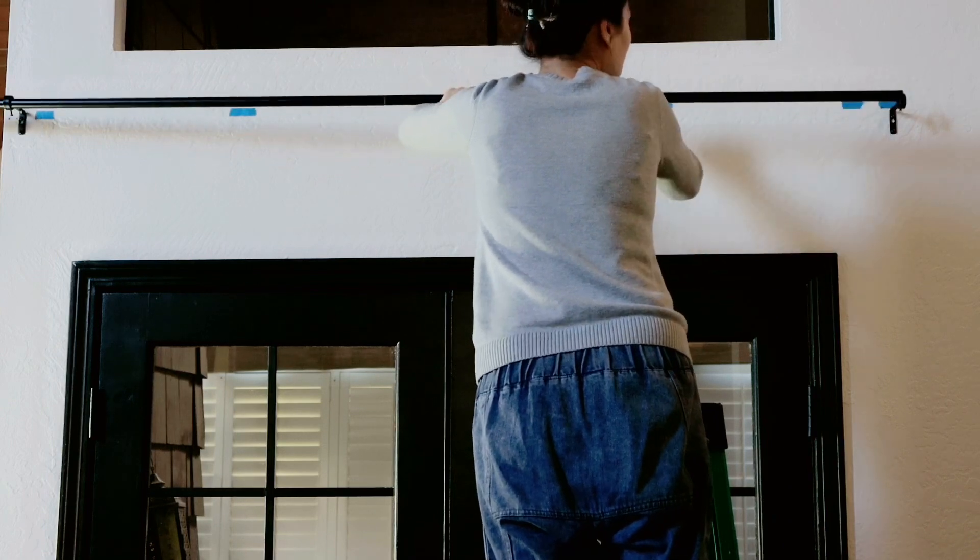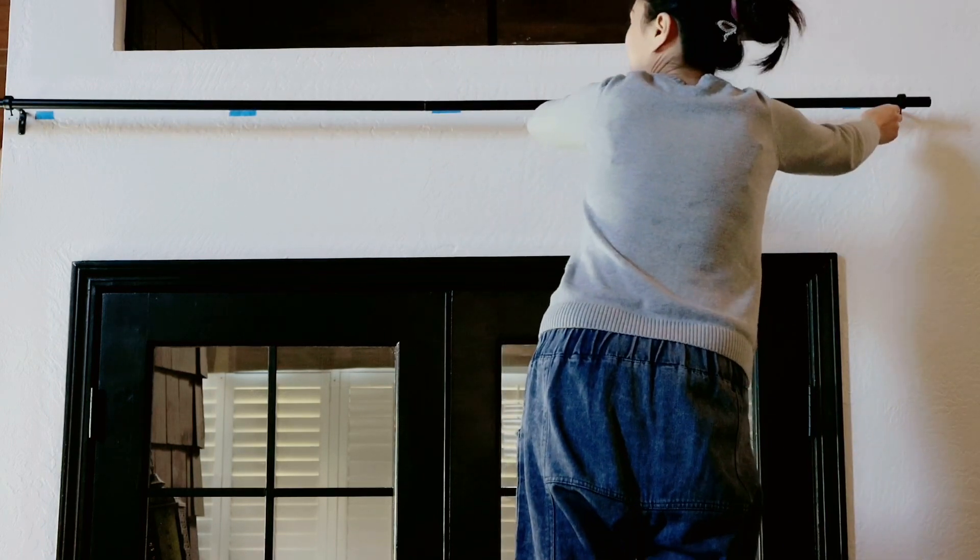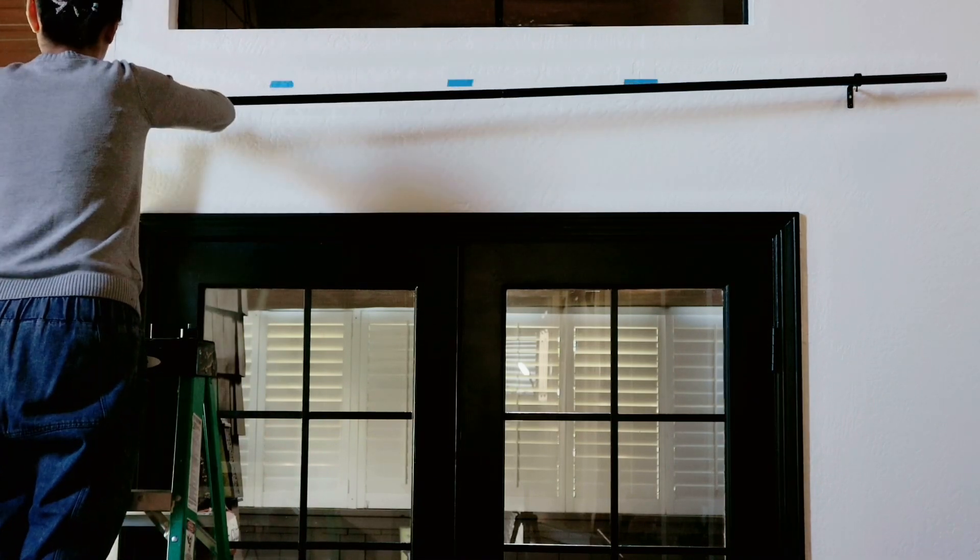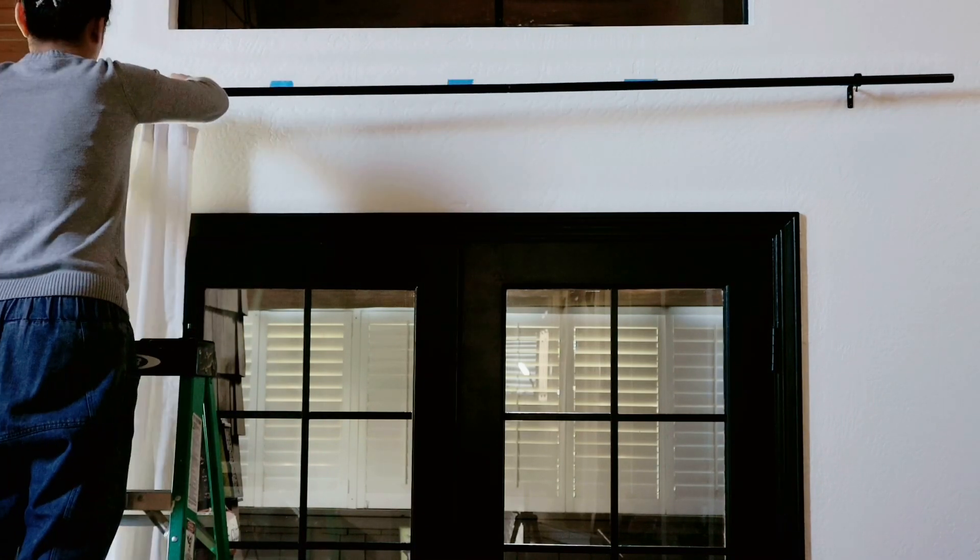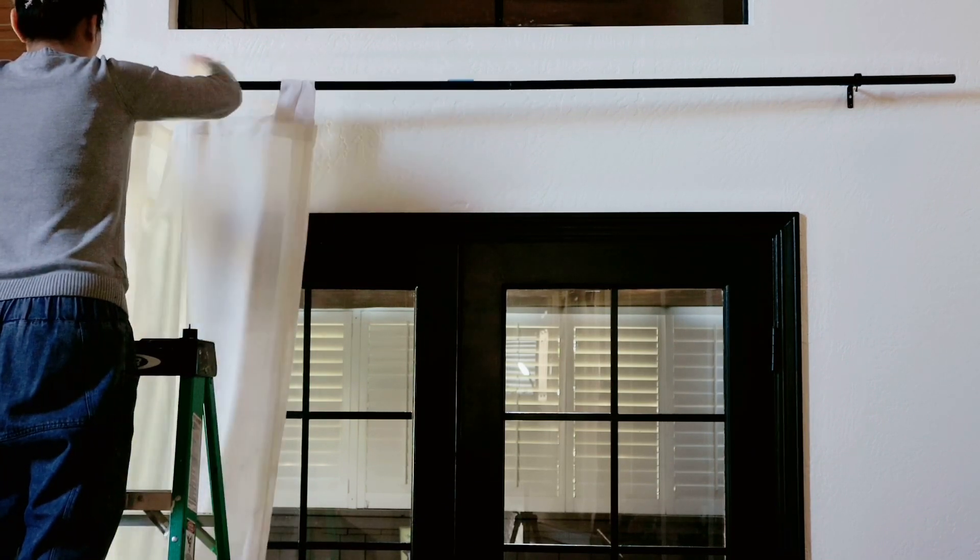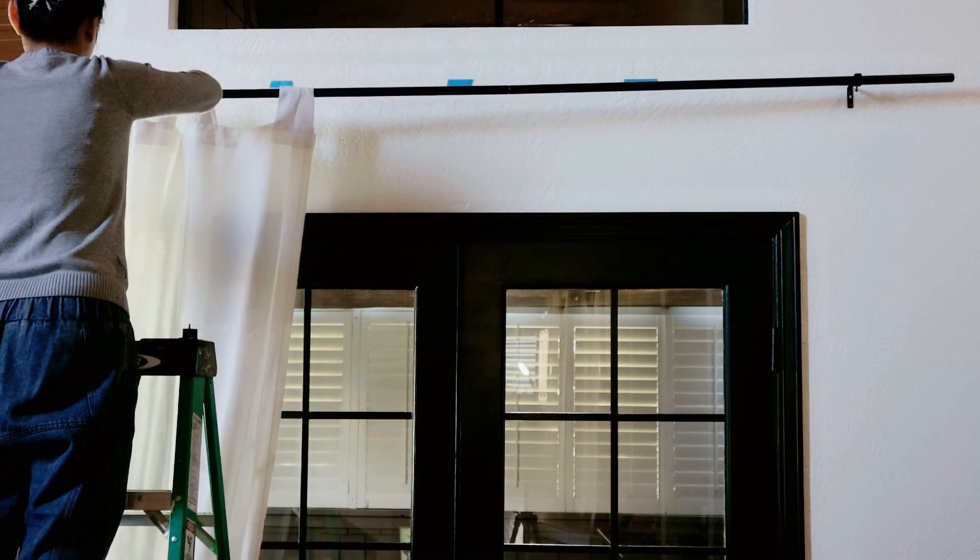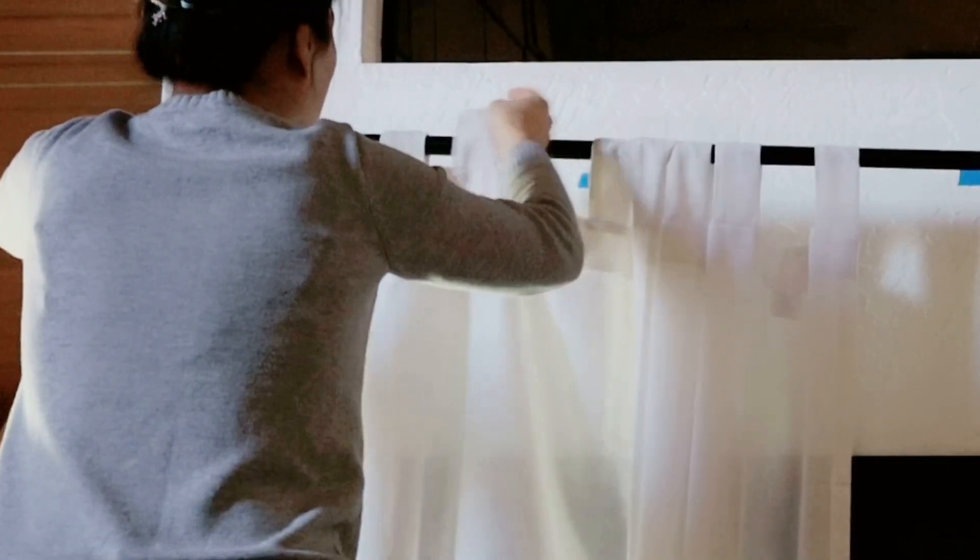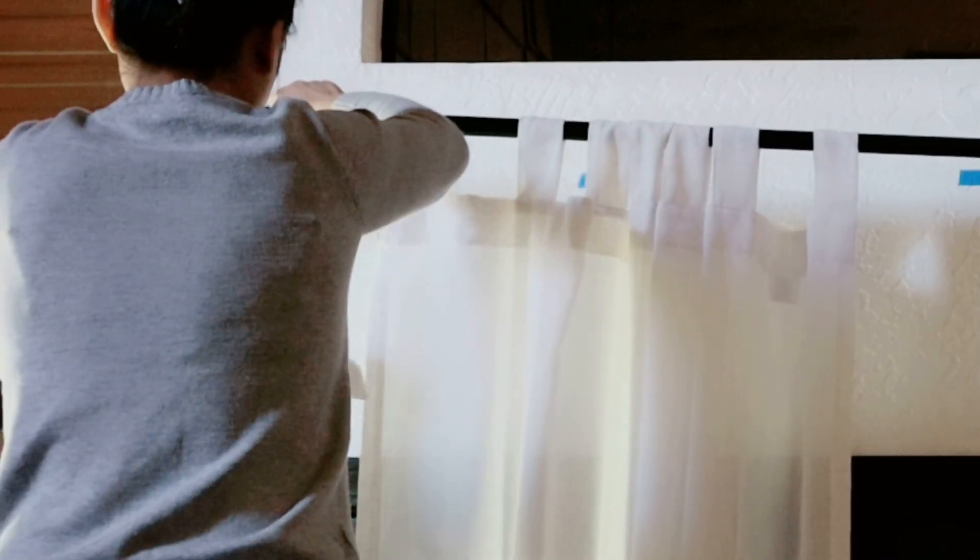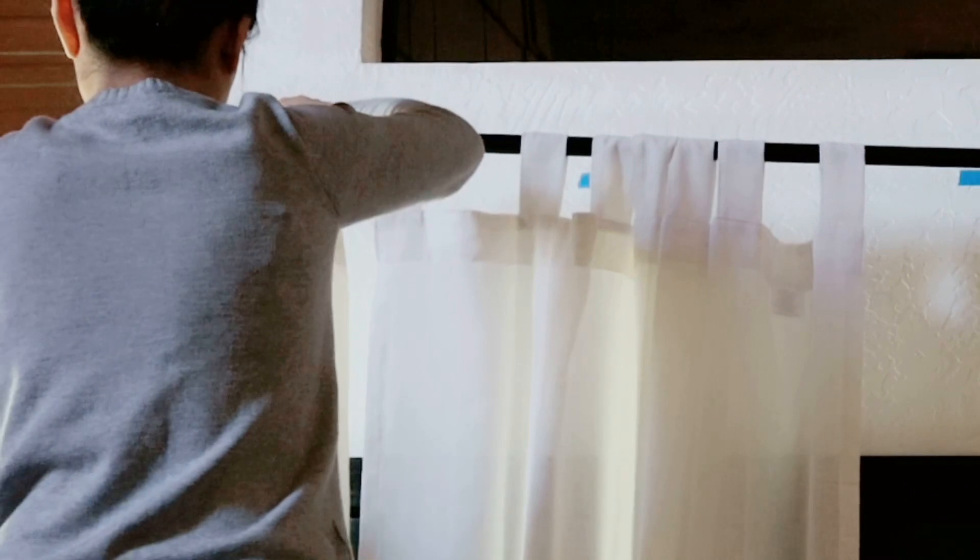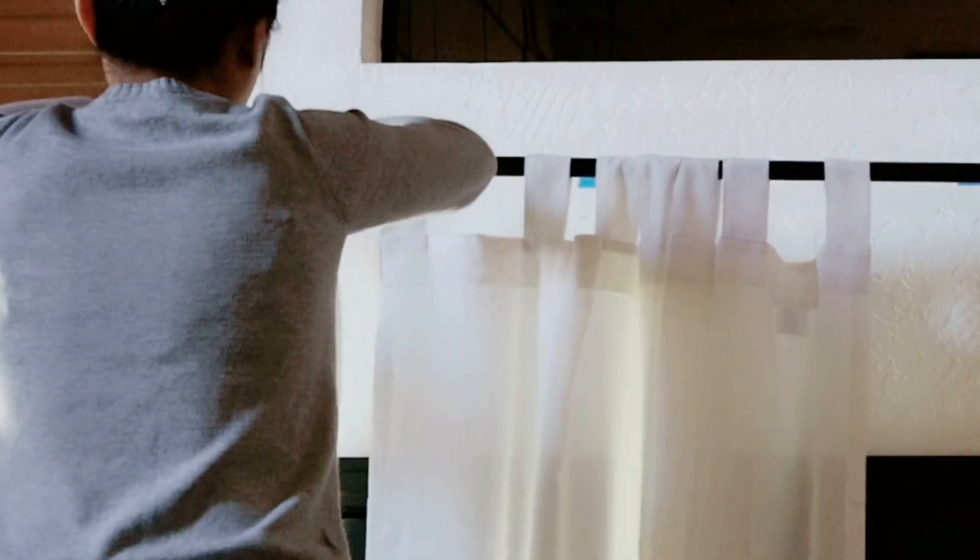I hung the new curtains much higher than the height of doors, so the space would look much bigger and brighter. I bought these curtains from Amazon on Prime Day. These are the linen blended fabric. The color is off-white and the size is 52 inches wide by 96 inches in height. I paid around $24 for the pair. I bought a total of 7 pairs as I'm planning to remove all the window shades and replace them with curtains for the entire house.